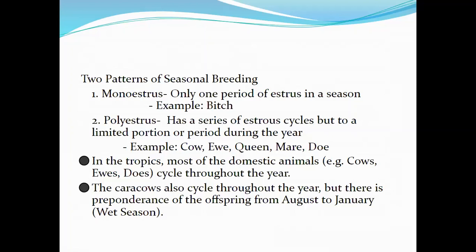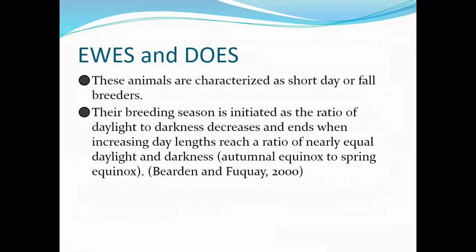For those who live north of the Arctic Circle, you can have only two hours of night during the summer and 22 hours of daylight. Carabao cows also cycle throughout the year, but there is a preponderance of offspring from August to January, which is our wet season. Ewes and does are short-day or fall breeders — their breeding season is initiated as the ratio of daylight to darkness decreases, from the autumnal equinox to the spring equinox.